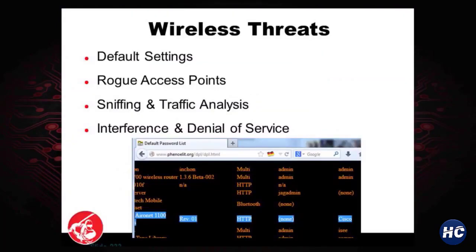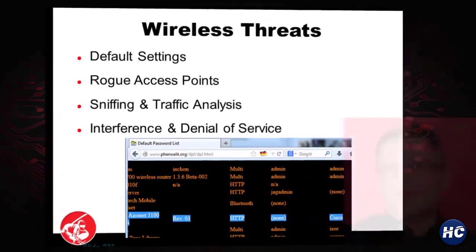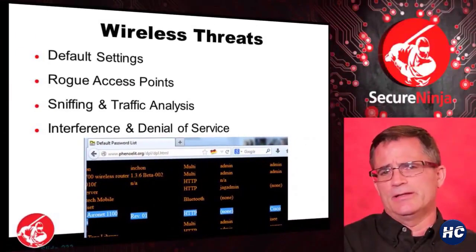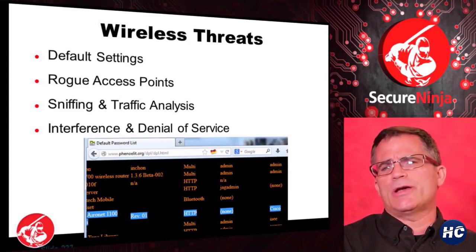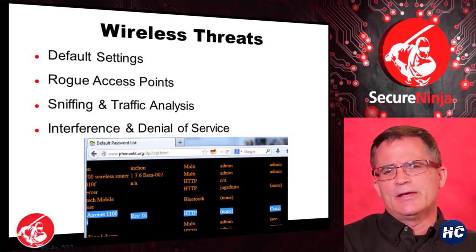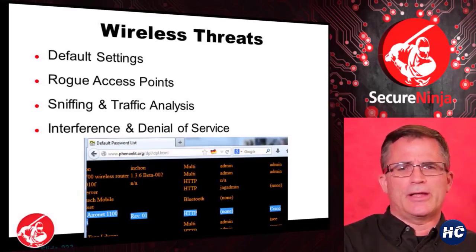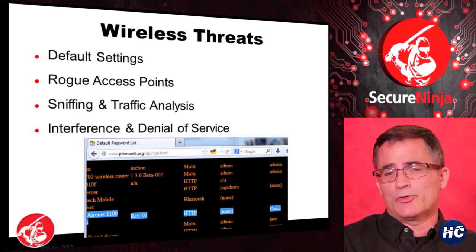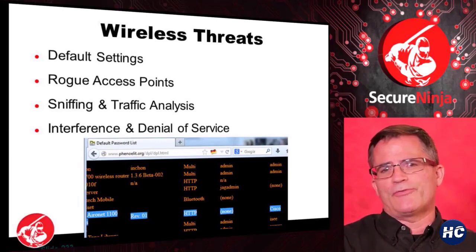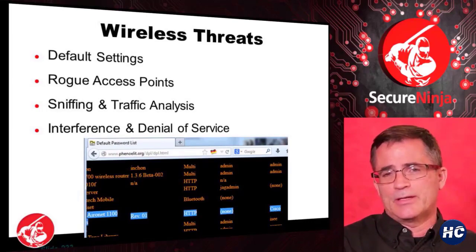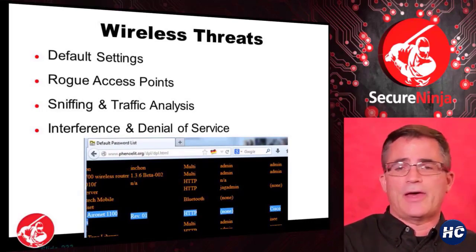Some of the threats of wireless: you have default settings. Almost everybody has set up a wireless access point at home, and those access points come with default settings. If you don't change them, those default settings are compromised. Rogue access points work by the principle that he who has the most power wins — if an attacker installs an access point that's two or three times more powerful than the legitimate one, most users will connect to the stronger signal, which is, in fact, the attacker.